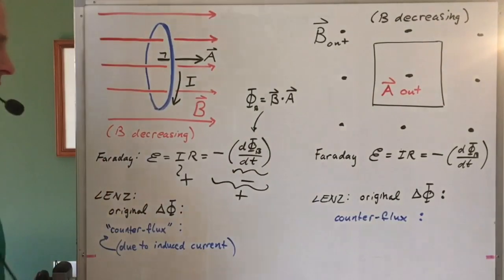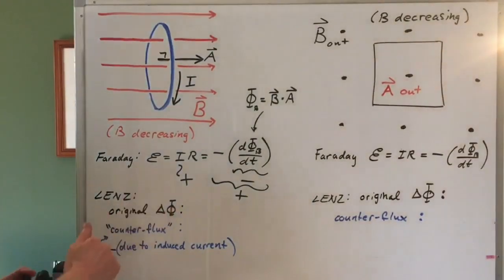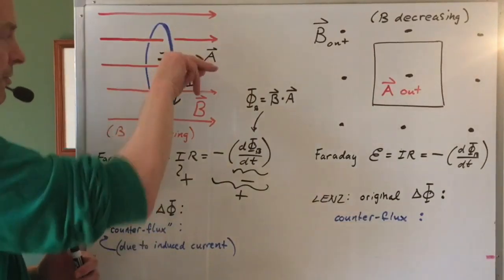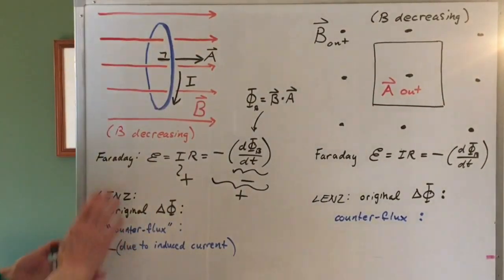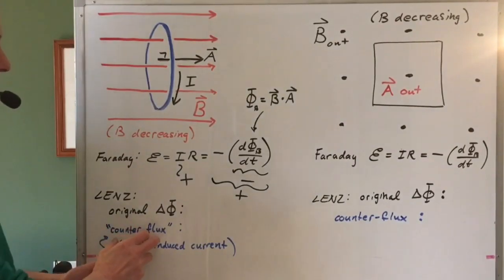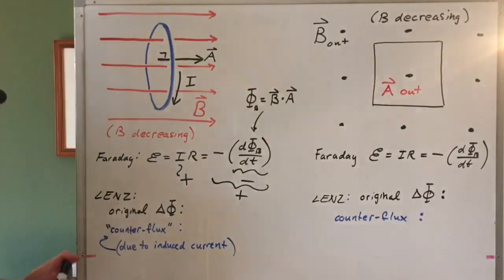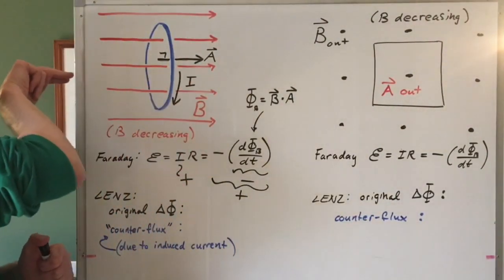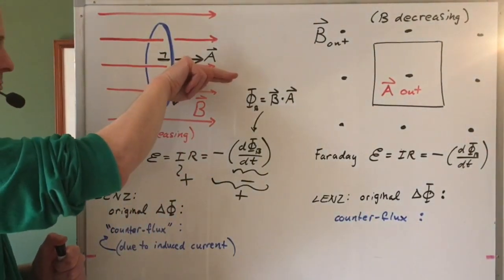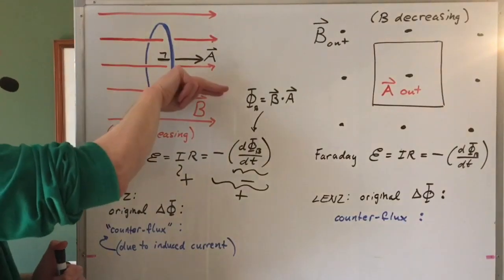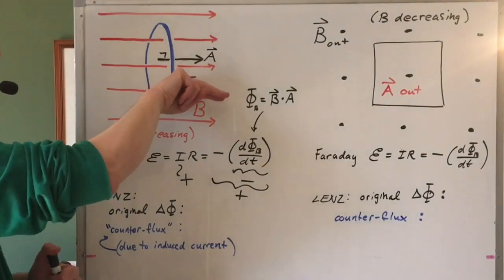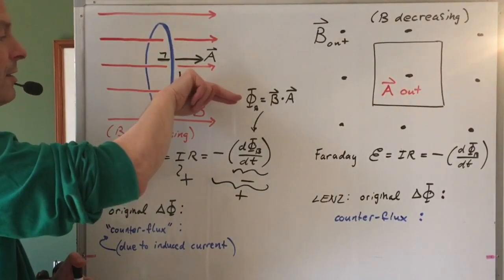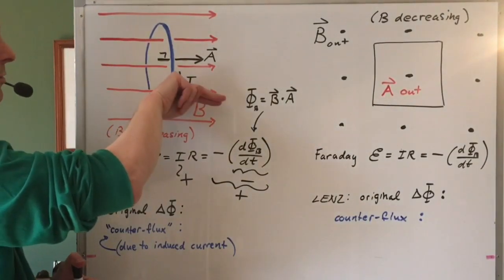Now let's do this using Lenz's law. With Lenz's law, we want to figure out first the change in flux — whether it's to the right through the loop or to the left through the loop. I've got a magnetic field to the right through the loop, which means I've got a magnetic flux to the right. But the magnetic field is getting weaker, so I had a flux through the loop to the right, and in the end I have a flux through the loop to the right, but there's less.